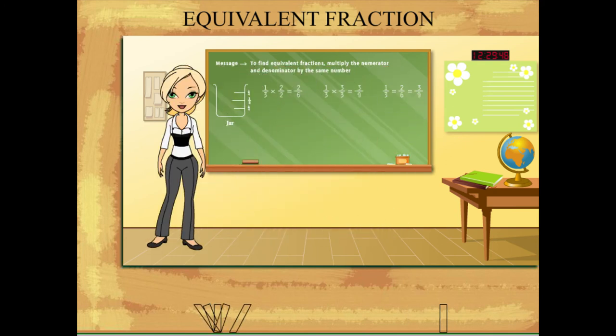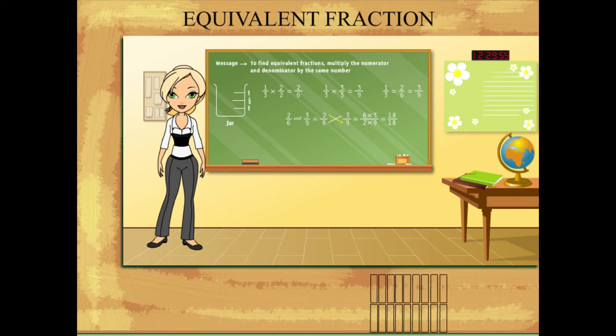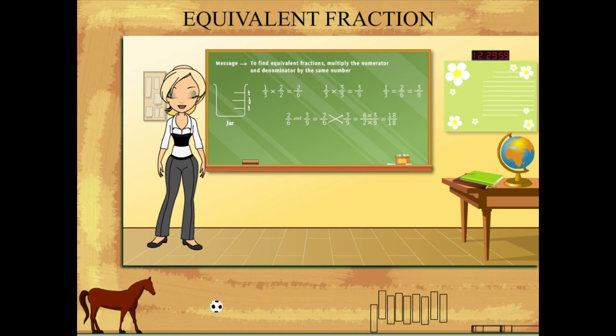To cross-check, cross-multiply two equivalent fractions and the product will be the same. 2 upon 6 and 3 upon 9 give 18 upon 18. Hence, they are equivalent fractions.